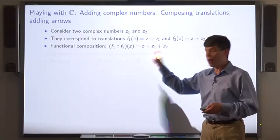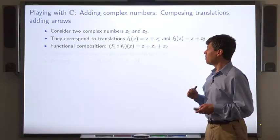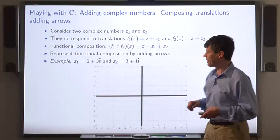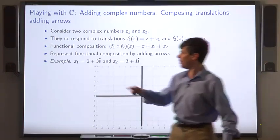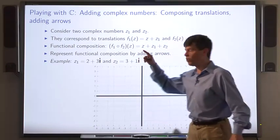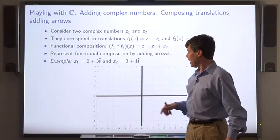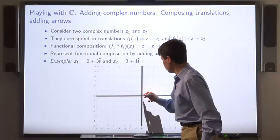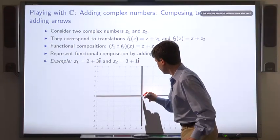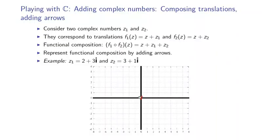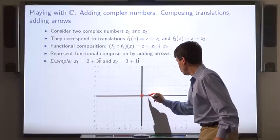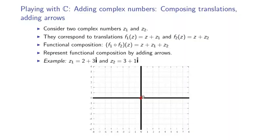So we can represent functional composition by adding arrows. Here's an example. Let's say we're first going to apply f2. So that takes a point. Let's start with the origin. And translates it three units to the right and one unit up. One, two, three, one. So that goes here.